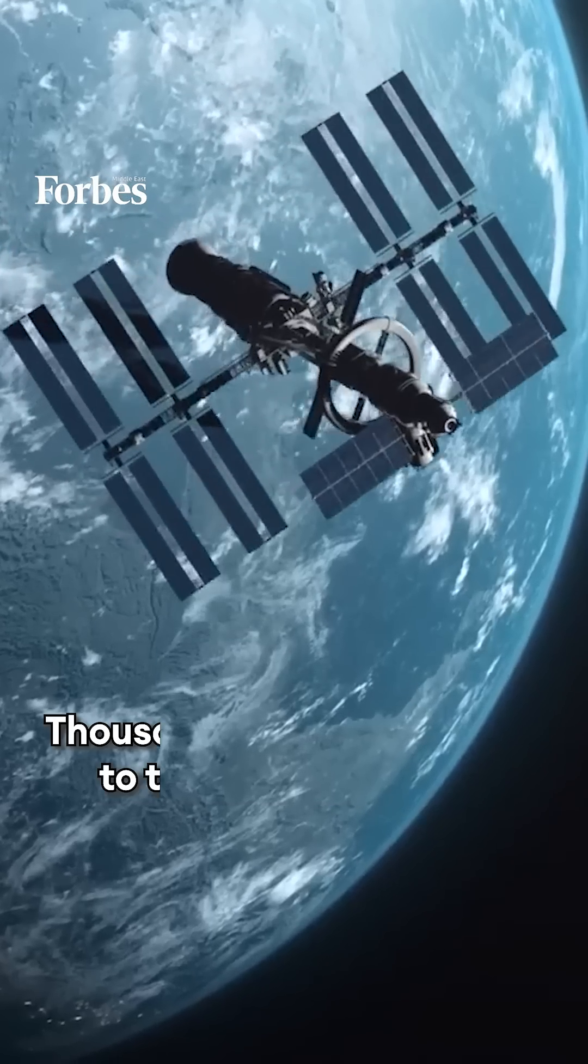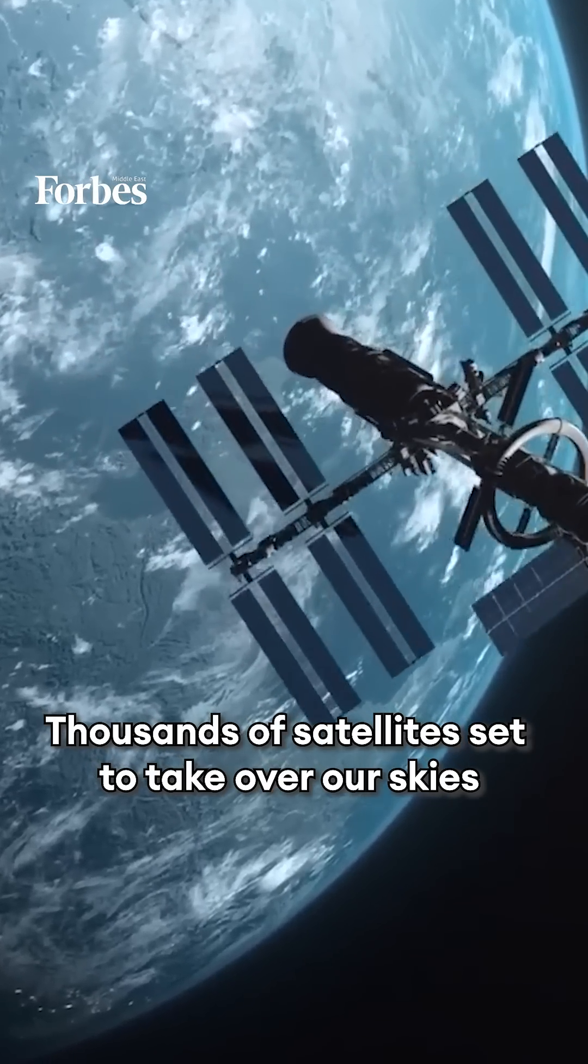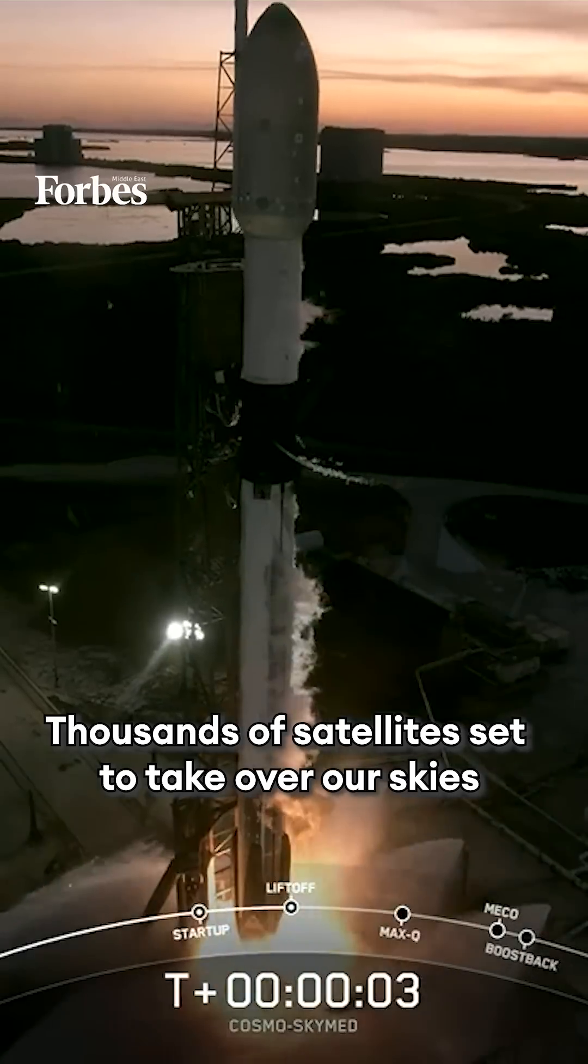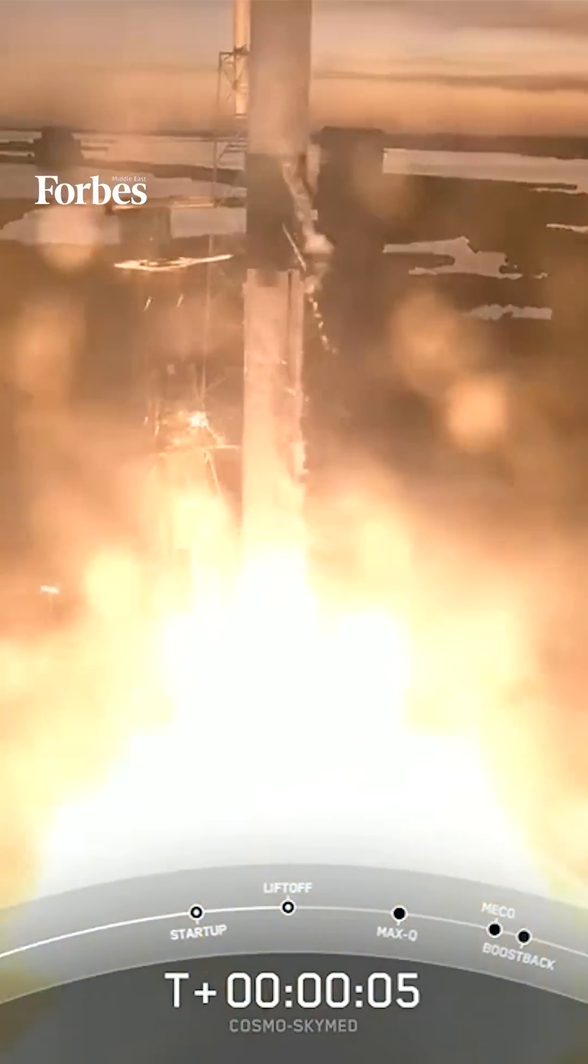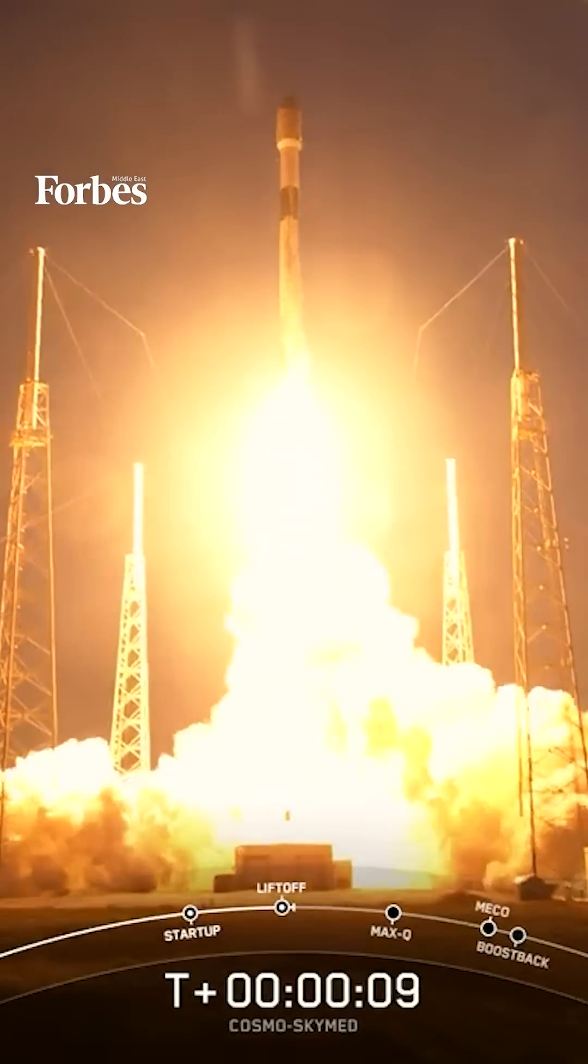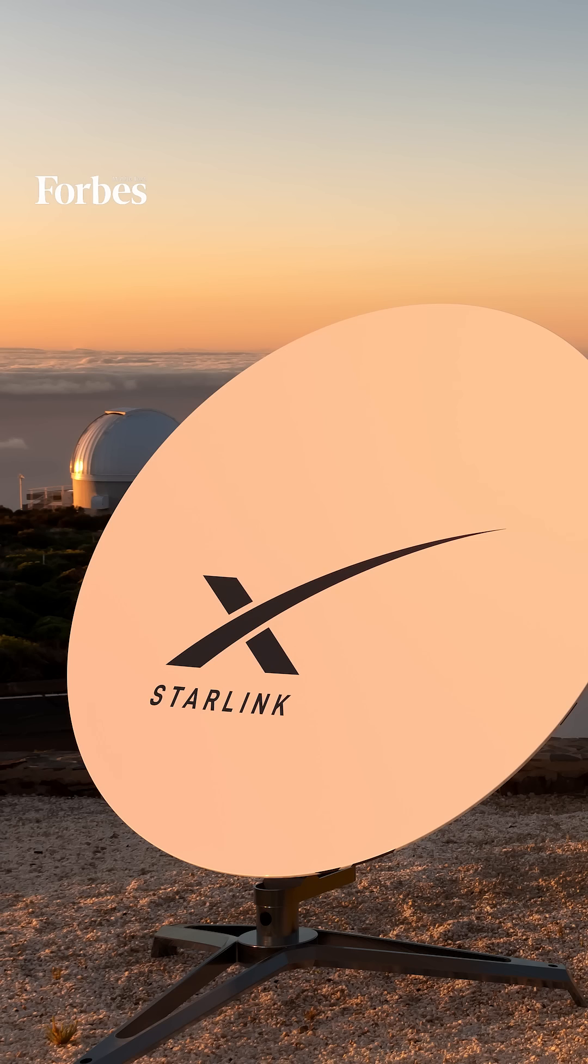The satellite industry is booming. In coming years, companies like SpaceX and Amazon plan to launch 42,000 and 3,000 satellites into orbit, respectively. With an average lifespan of just five years, Starlink alone would need to launch around 23 satellites per day to maintain its network.